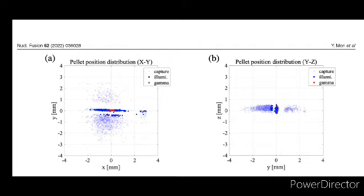As shown in figure 5, most of the illuminated pellets were distributed in a region plus minus 2 mm in the X direction and plus minus 0.1 mm in the Y direction.